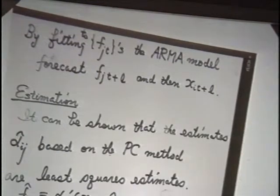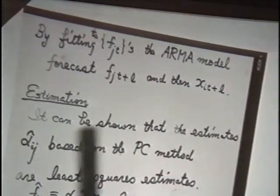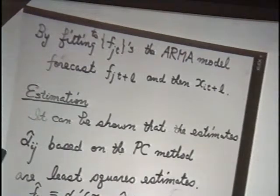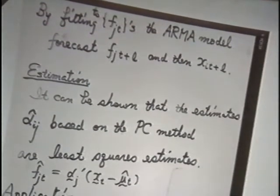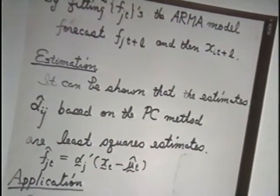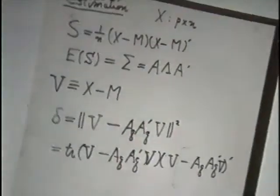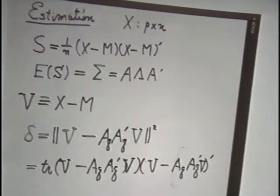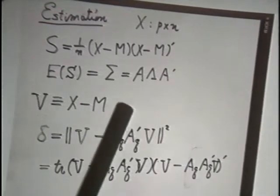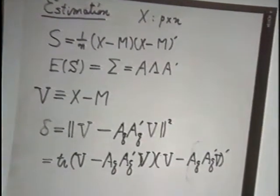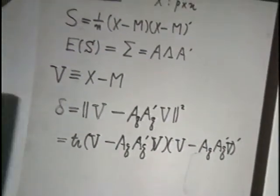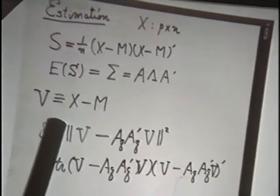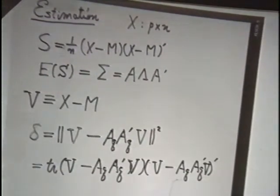Second question is estimation. It can be shown that estimates of coefficient based on the principal component method are least squares estimates. Of course, if we form S as sample covariance matrix, then by a moment method, you may say that we can estimate A by a principal component method. But what I meant by least squares method is as follows. Let V to be X minus M, where M is the estimate of the mean matrix. Then, since we are trying to approximate the variation of V by this matrix, if we write it in a matrix form, then if we minimize this one, we get A to be the coefficient of the principal components.